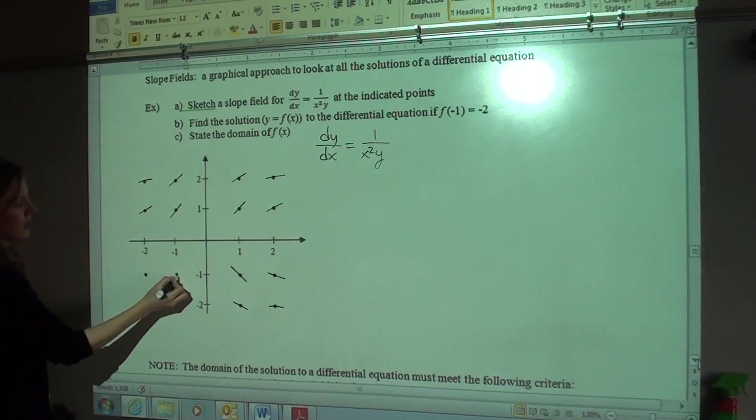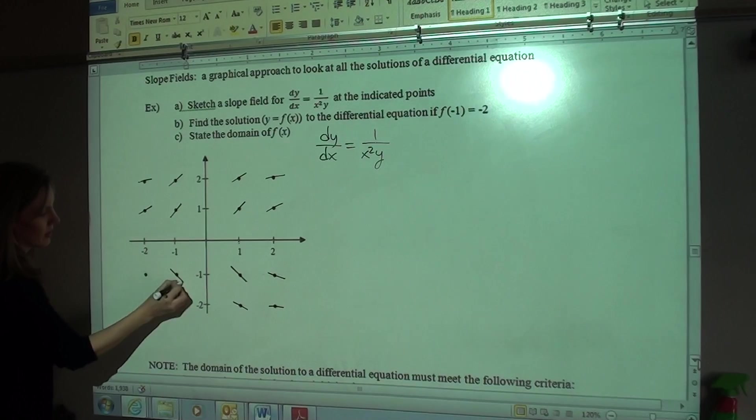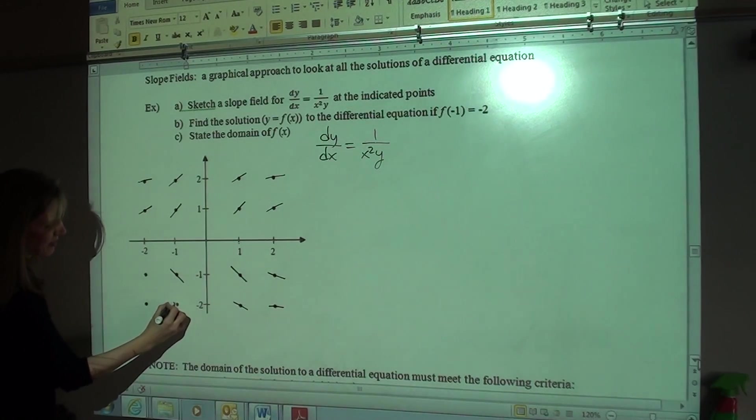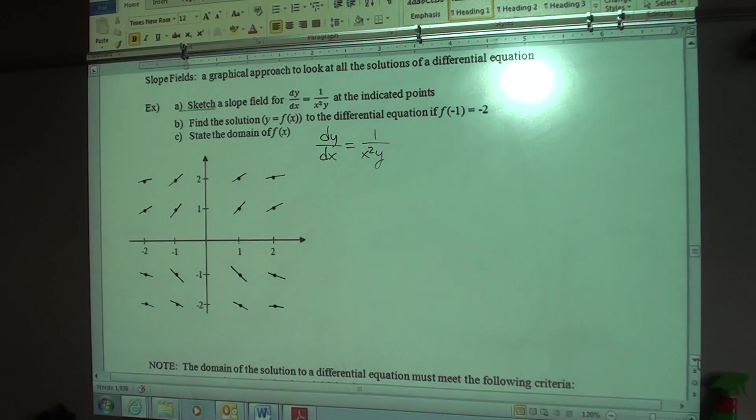All right, and then here, if x is negative 1 and y is negative 1, what's the slope? Still negative 1. So these are going to be just like this. So negative 1, negative 1 half, negative 1 fourth, negative 1 eighth. So wait, what's this graph even supposed to look like? You know, this one would be a tricky one.